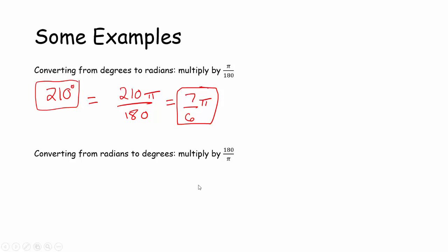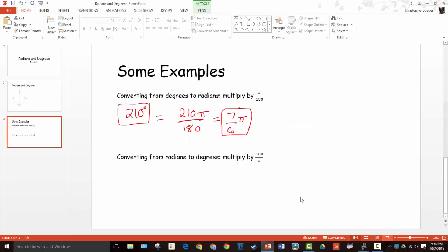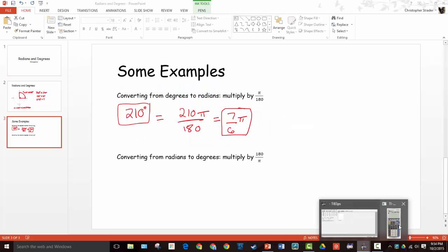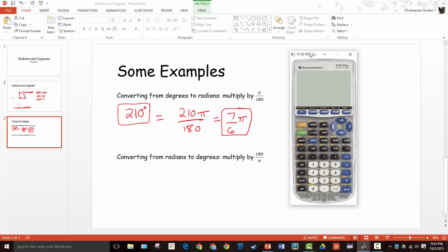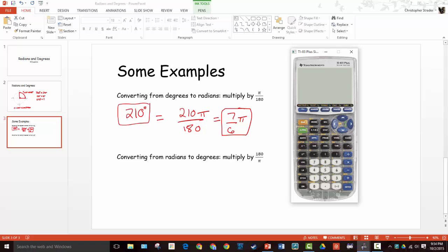And you know what, I'm going to pull up my calculator here, really quick, because I want to check that out. So if I wanted to figure out 210 degrees, how many radians is that? So it's going to be 210π/180, so 210 degrees is about 3.7 radians. There it is.